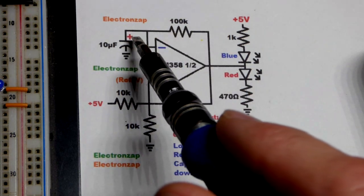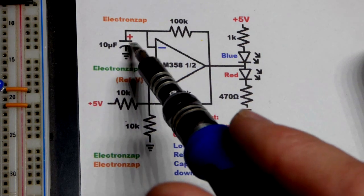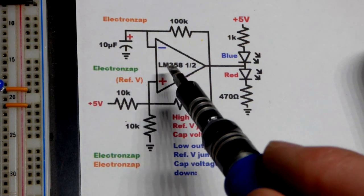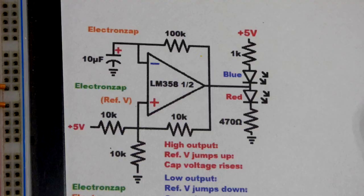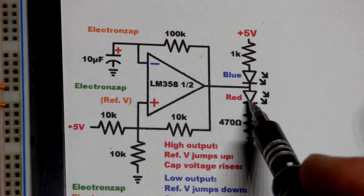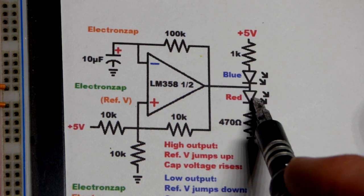Pulling this voltage down so it's also low, it starts discharging the capacitor. The capacitor keeps discharging till it drops down to the reference voltage.